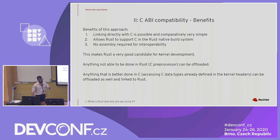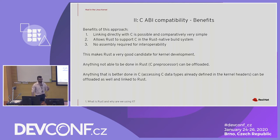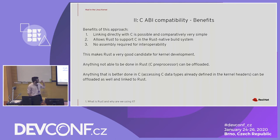This makes Rust a very good candidate for kernel development. Anything we can't offload to Rust can still be done in C. Things like the C preprocessor really need to be done in C — there's no type-safe way to represent that. Particularly if we're accessing data fields in a struct littered with ifdefs, we'll want to offload that to C as well.